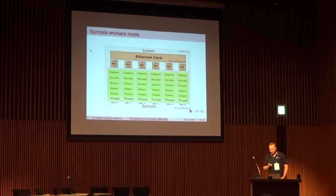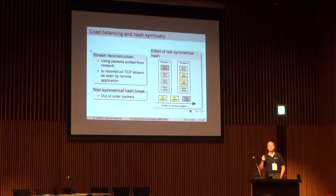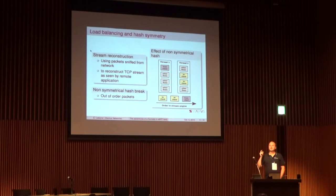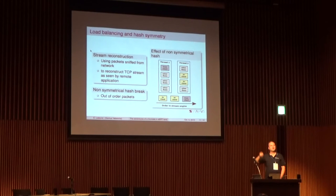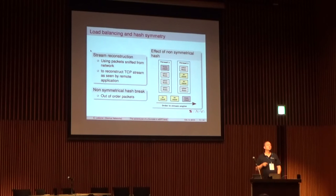This is the ideal world, but we've got some problems. One of the problems we have is that we really need the flow hash to be symmetric. If the flow hash is not symmetric, we will have real issues. By symmetric, I mean that when I compute the hash that tells which RSS queue or which thread will handle all the packets for a flow, I want all packets for a single flow to go to the same thread.